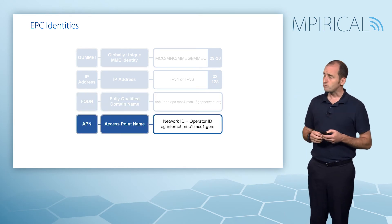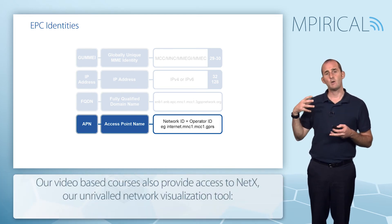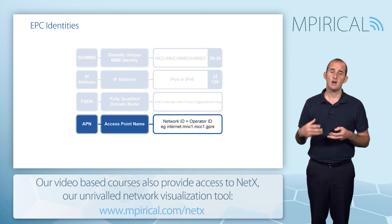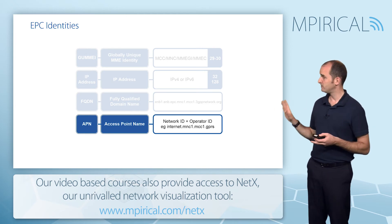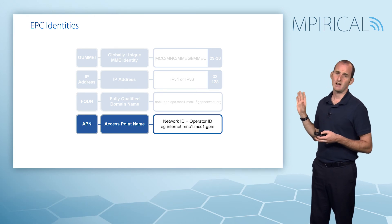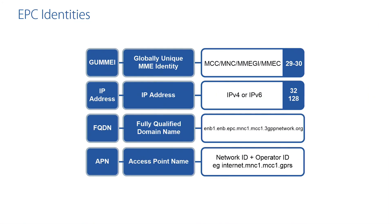Finally, we have our access point name (APN). The PDNs that we are able to connect to are identified by an APN, and the composition of that APN is a network ID plus operator ID. When we connect to a particular PDN, the device needs to identify the access point name to which it is connecting.